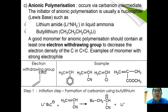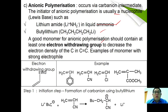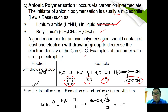Anionic polymerization occurs via carbanion intermediates. The initiator is usually a nucleophile, which is a Lewis base such as lithium amide or butyllithium. A good monomer for anionic polymerization should contain at least one electron-withdrawing group to decrease electron density in the C=C bond — for example styrene, cyanide, halogen, and ester.